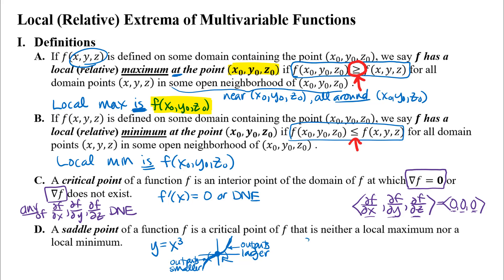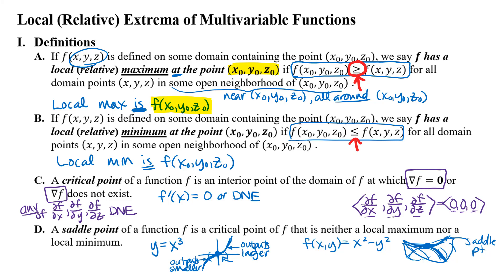For multivariable functions, consider f(x,y) = x² − y². The graph of such a function looks like a saddle — like a Pringle chip. At the saddle point, in one direction you have a parabola opening upward with the lowest point on it, and in another direction a parabola opening downward with the highest point on it. Every neighborhood around that point contains points on the surface with higher function outputs (along the upward parabola) and lower function outputs (along the downward parabola), so every neighborhood contains both larger and smaller values.